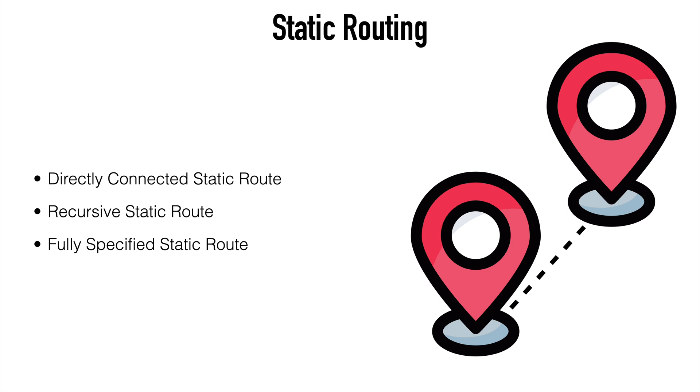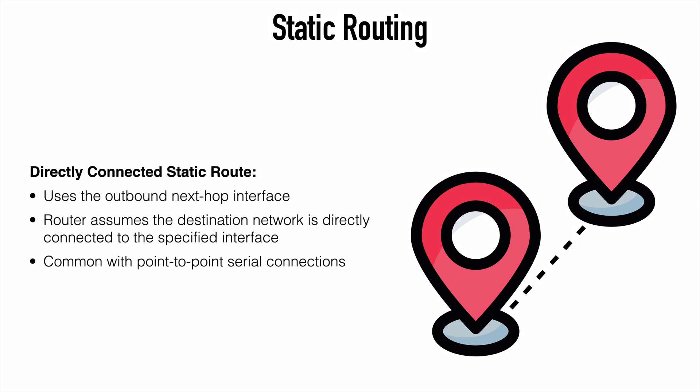We have directly connected static routes, recursive static routes, and fully specified static routes. A directly connected or directly attached static route is fairly self-explanatory. This is a static route that uses only the outbound next hop interface in order to get to a destination network. The router assumes that the destination network is directly connected to the outbound interface that you specify. We commonly see this used with point-to-point interfaces, especially point-to-point serial interfaces.